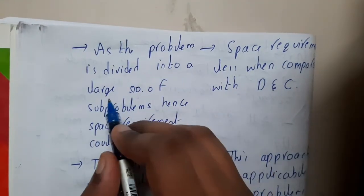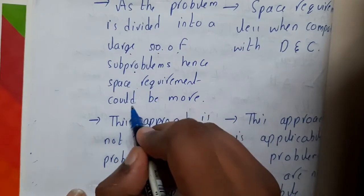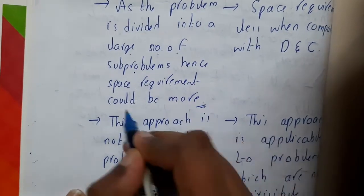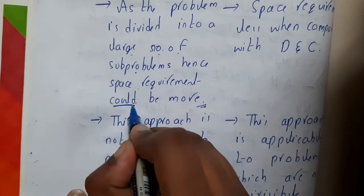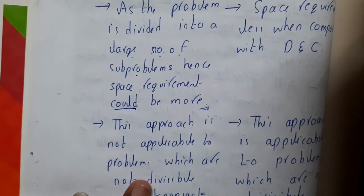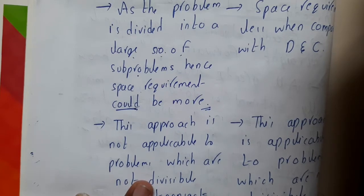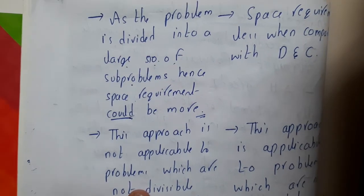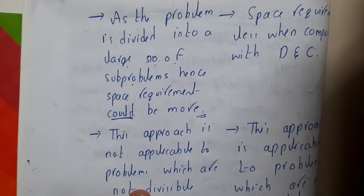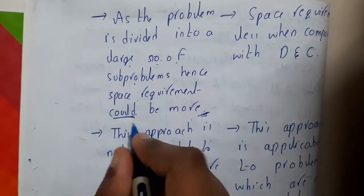In divide and conquer, since the problem is divided into a large number of sub-problems, the space required could be more. We say 'could be more' — not that it will always be more. For example, merge sort does not take even a single byte of extra space; the memory requirement stays the same regardless of the number of input values.